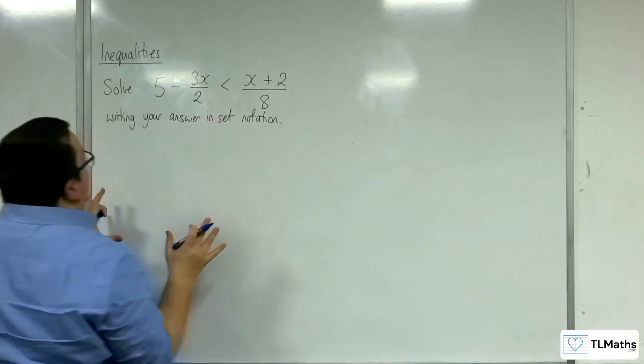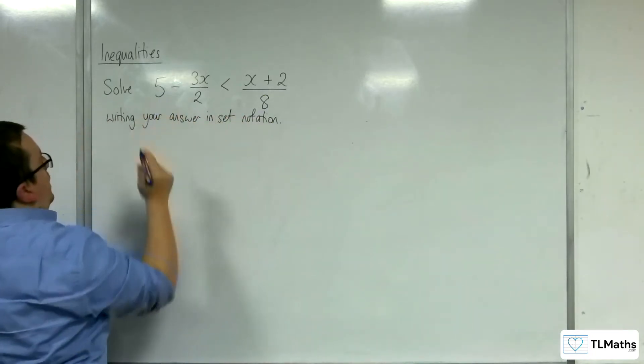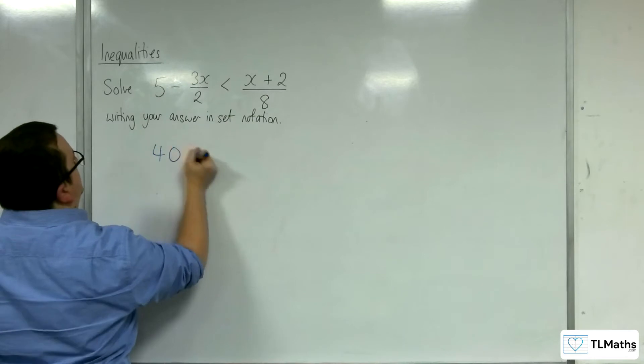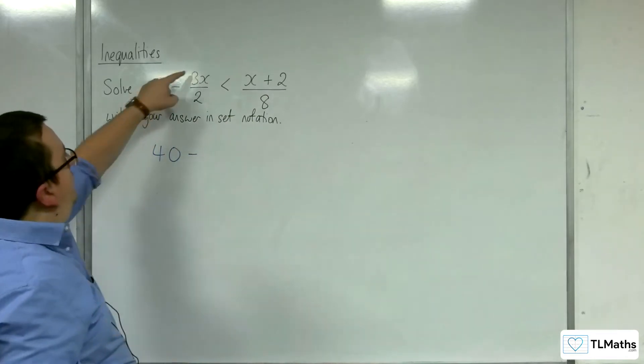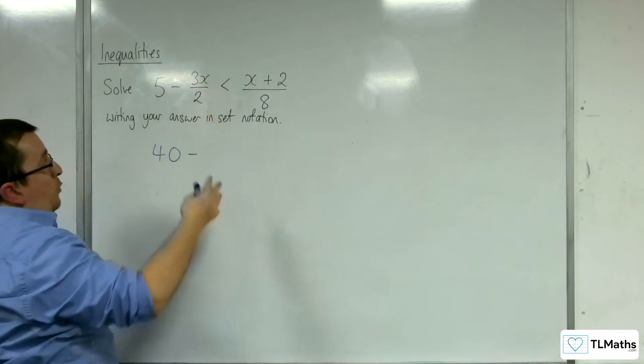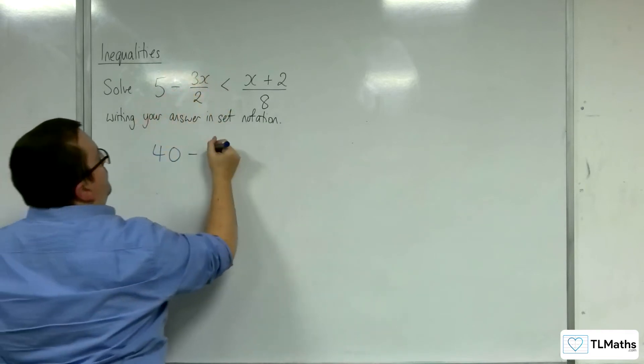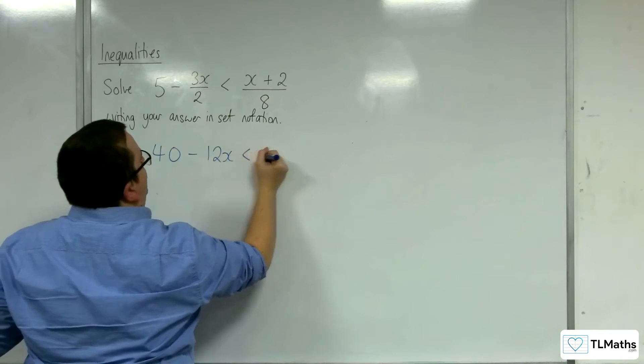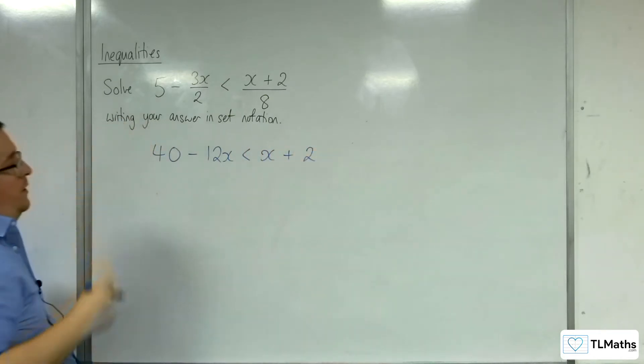I'm going to multiply everything through by 8. We're going to get 5 times 8, which is 40. Then we've got 3x over 2 times 8. The 8 divided by 2 is 4, so we get 3x times 4. So 40 - 12x < x + 2.